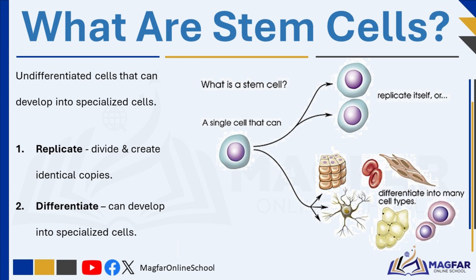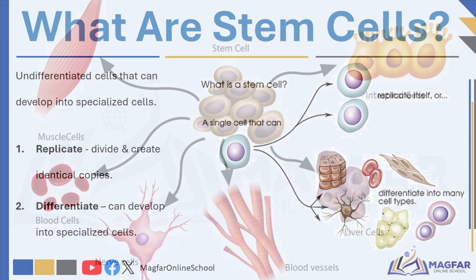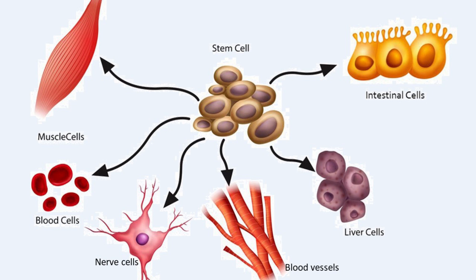What are stem cells? Stem cells are undifferentiated cells that have not yet developed into specialized cells. They have two main characteristics that make them unique: replication and differentiation. Replication means stem cells can divide and replicate, like making photocopies of themselves. Differentiation means stem cells can transform into specialized cells such as muscle cells, nerve cells, or organ cells. Because of these abilities, stem cells can be used to repair damaged tissues and organs and even create new ones, and they have the unique ability to transform into almost any type of cell in the human body, making them essential for growth, repair, and medical treatments.